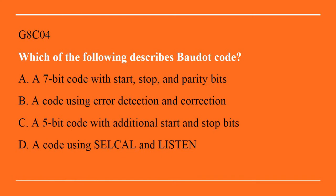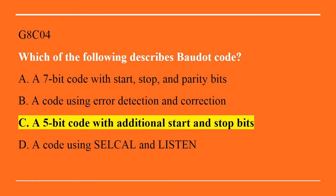G8C04: Which of the following describes Baudot code? A. A 7-bit code with start, stop, and parity bits. B. A code using error detection and correction. C. A 5-bit code with additional start and stop bits. Or D. A code using CELCAL and LISTEN. The answer is C, a 5-bit code with additional start and stop bits.